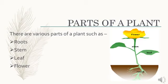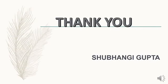Parts of a plant. There are various parts of a plant such as roots, stem, leaf, and flower. We will discuss these parts in detail in the next class. Thank you everyone.